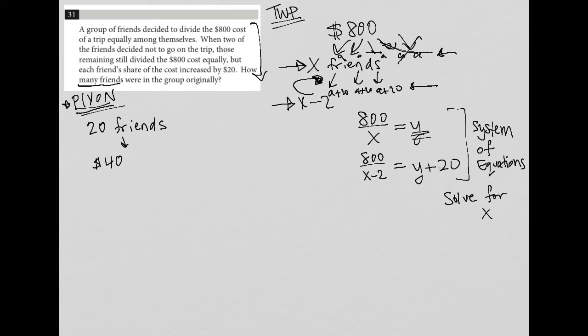However, if we now moved this to there being only 18 friends because two of them decided not to go, then 800 divided by 18, let's go to the calculator, that ends up being $44.44. So by removing these two friends here, each friend pays an additional $4.44. Now don't forget, we want each friend to pay an additional $20. So this tells me that 20 friends is off. So let's do another number.